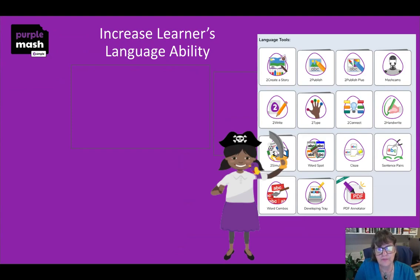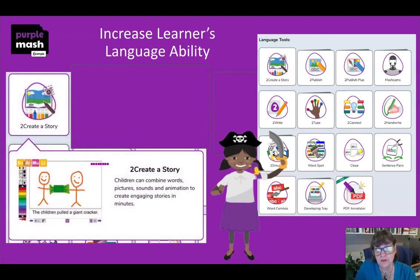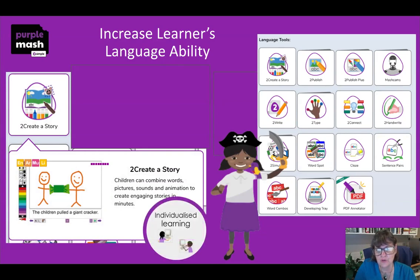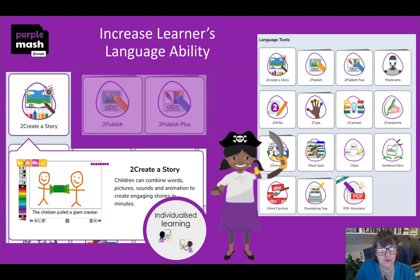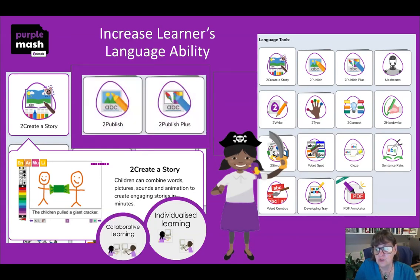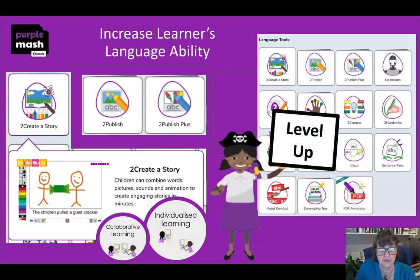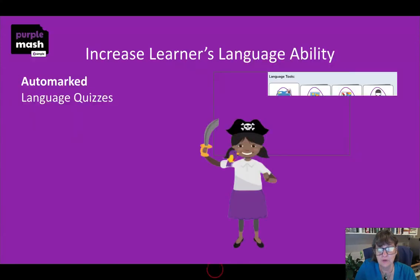What about languages? There are language tools inside Purple Mash as well. A favourite is 2Create, where children can combine words, pictures, sounds, and animations to create really engaging stories. What about 2Publish and 2Publish Plus? There are a range of different activities inside this platform — think of any publishing document you need and you'll find it here. Getting children to work individually or collaboratively on activities is really important, so level up and think about how you would use these tools.